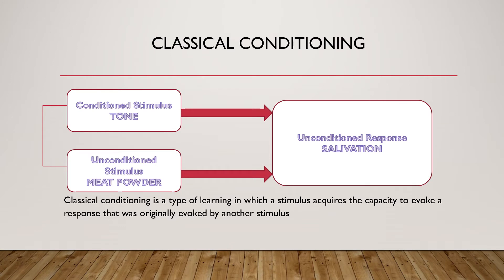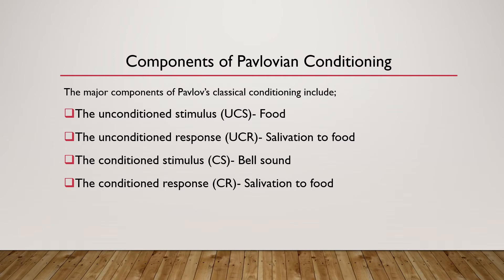Classical conditioning is a type of learning in which a stimulus acquires the capacity to evoke a response that was originally evoked by another stimulus. In the example I am giving, the conditioned stimulus — the bell sound or tone — is paired with meat powder to produce salivation, which earlier would have been evoked within the absence of the conditioned stimulus.